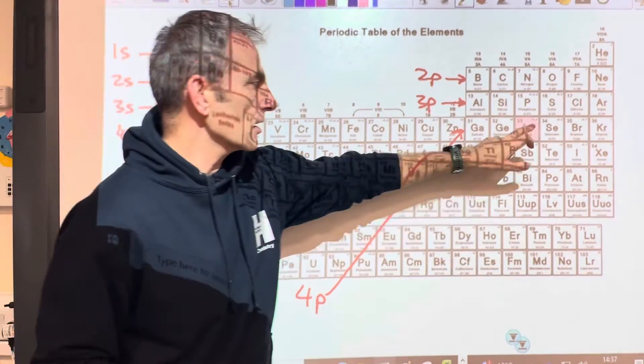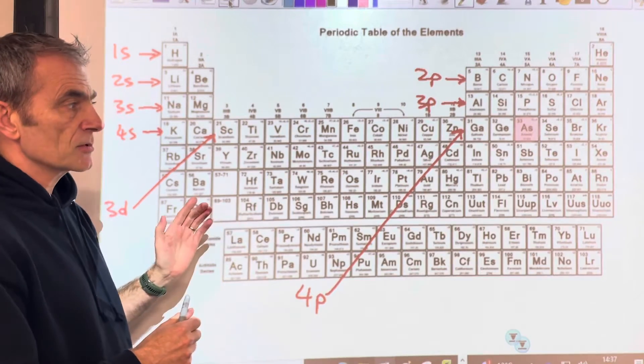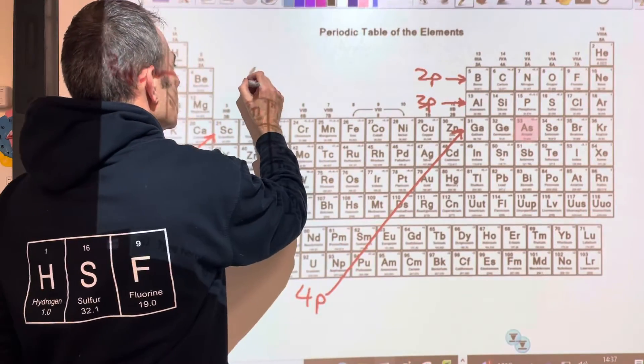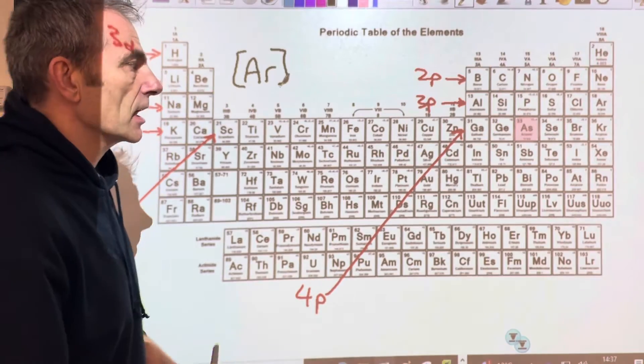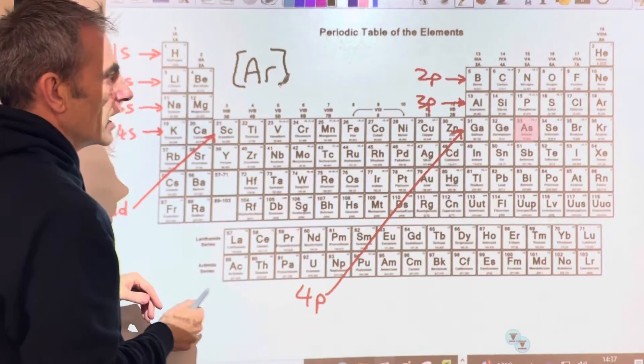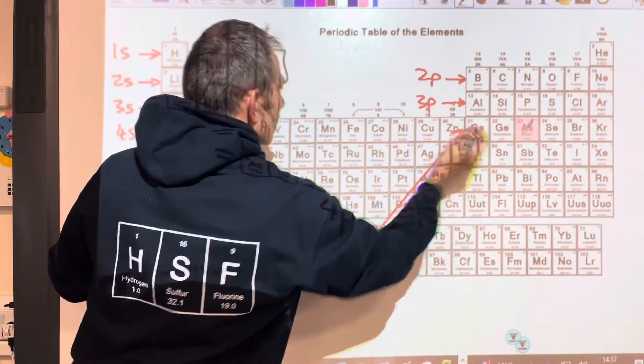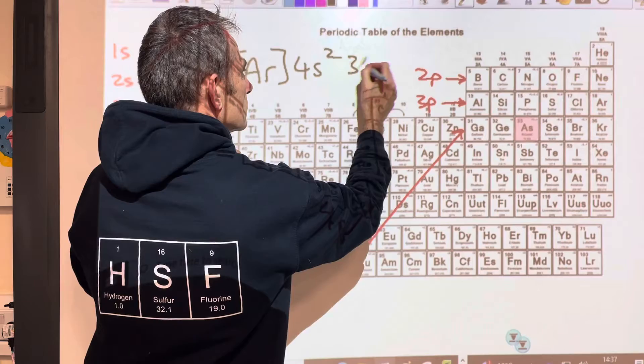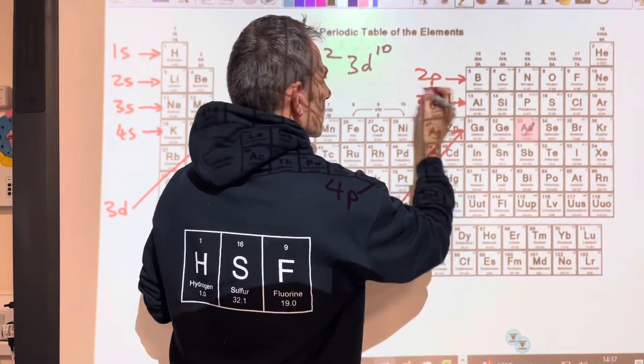You can see I've highlighted arsenic there. So the way it works is you go for the noble gas that comes before. The noble gas before arsenic is argon, and we write Ar in a square bracket. You're basically just saying it's got argon's electron configuration, and then we just pick up the sub-shell filling from there on. So after argon it's 4s², obviously that's going to be full because we're right over here, 4s² 3d¹⁰, and then look at where it is in this 4p section: one, two, three. So it'll be 4p³.